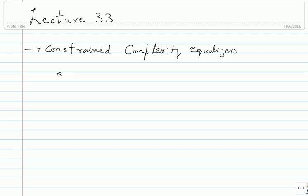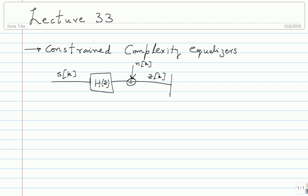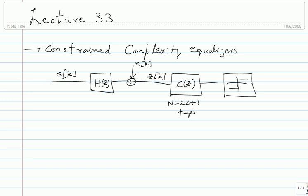Let me remind you of the overall system. We took a general system model where h(z) is not necessarily minimum phase, then noise gets added, and we have z_k. In constraint complexity equalizers, we put a filter with n = 2L+1 taps - a 2L+1 order filter with coefficients c_{-L} to c_{+L}. Whatever you get out you're going to slice. Given this constraint, what is the best possible c(z) I can pick?